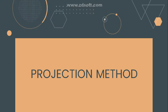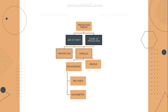The projection method or projection theory is based on two elements: the line of sight and the plane of projection. These two elements can be divided into perspective and parallel projection. Parallel has orthographic and oblique, and orthographic has multi-view and axonometric.